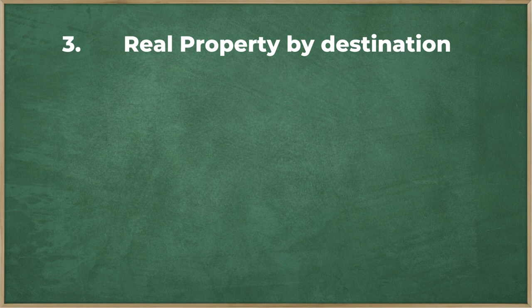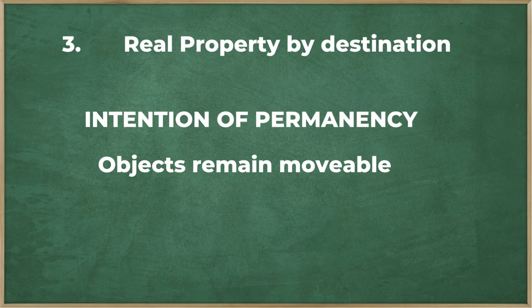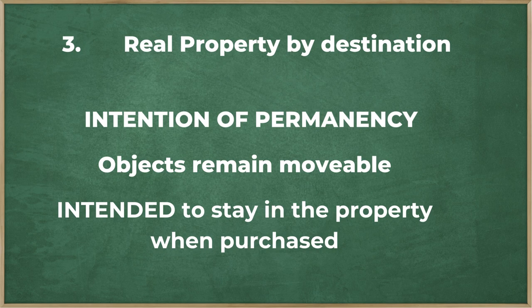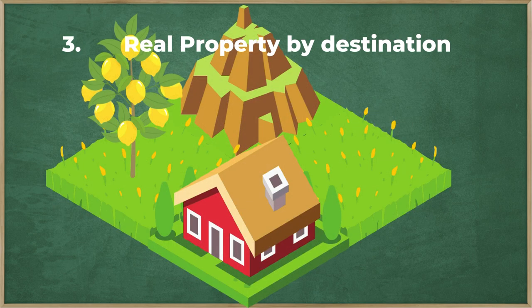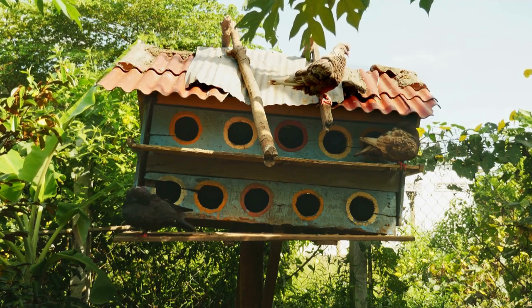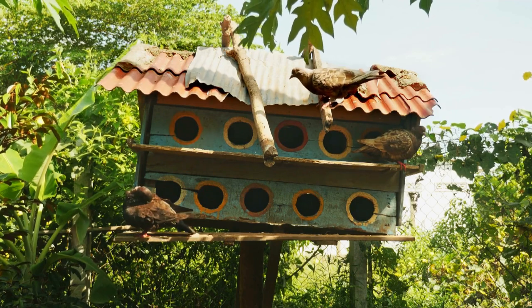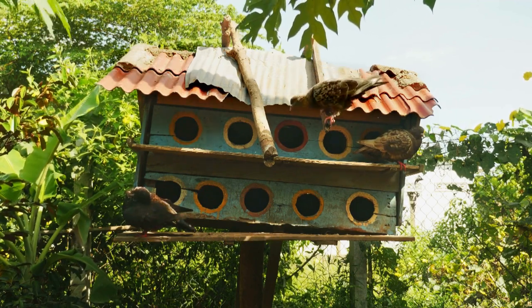Number three: real property by destination. The keywords for this group are intention of permanency. These are movable objects that can still be moved without causing damage. What happens with real property by destination is that the intention when purchasing it was to stay in the property. Imagine the same land with the house, but you buy a pigeon house to raise birds. By nature, the pigeon house can be placed somewhere else. However, by the intention of leaving it there, it can be rendered real property, as it is intended to stay on the land.